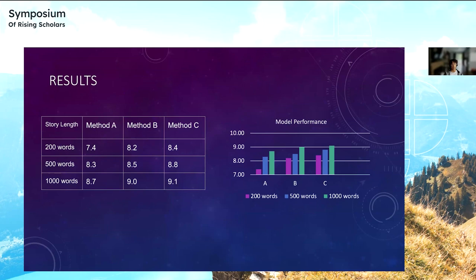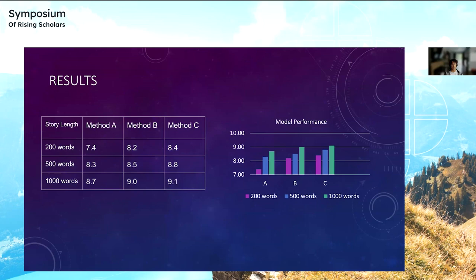Through our overall results, given varying story lengths, method C did the best across the board, followed by method B and then method A. The story length seemed to improve the overall quality of the story, as you can see in the bar graph on the right.